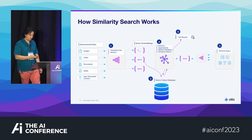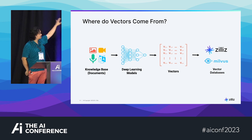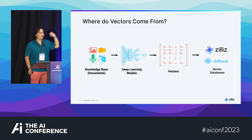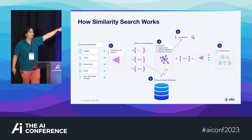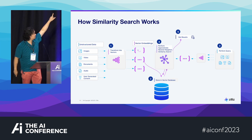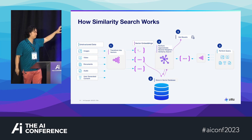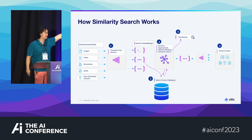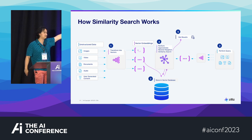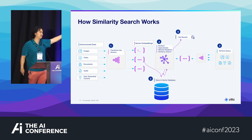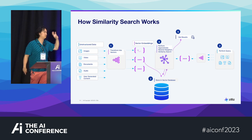How does similarity search work? In step one, you transform your documents into vectors. In step two, you store them in a vector database. At query time — step three — you do essentially the same thing as steps one and two: you generate a vector for your query, then feed it into the vector database. The vector database will return an approximate nearest neighbor search, giving you the vectors that are closest in distance.